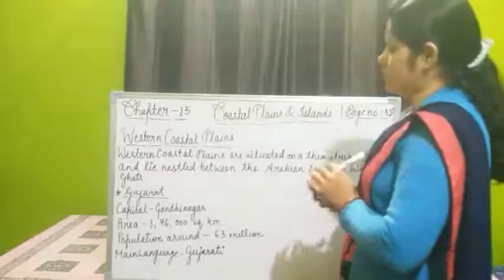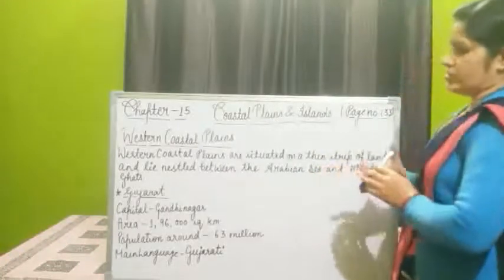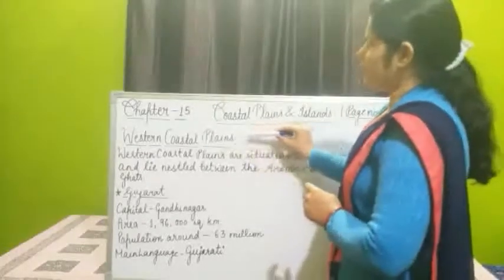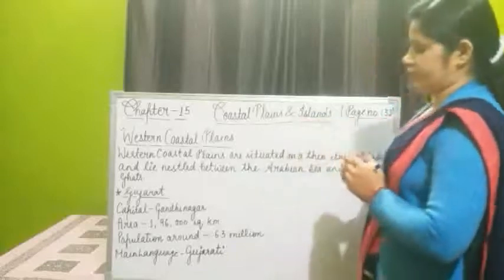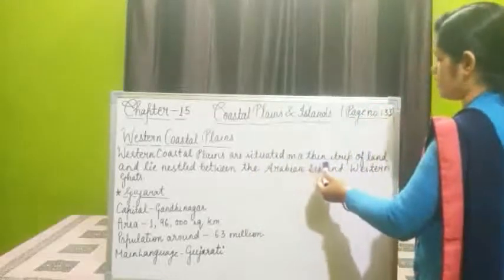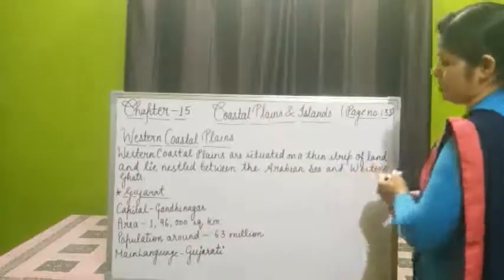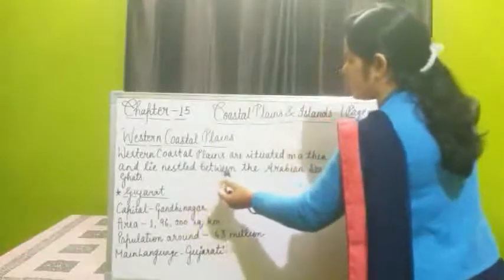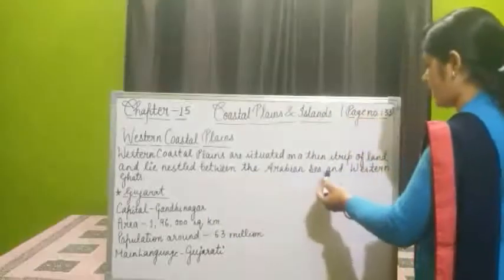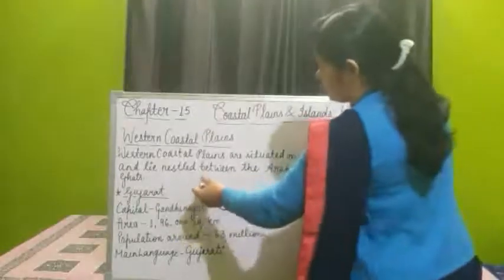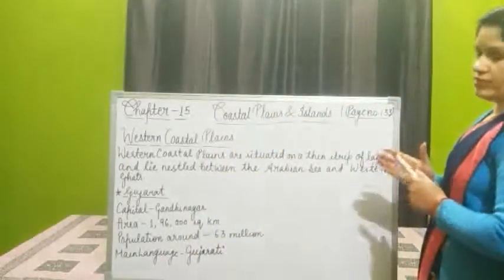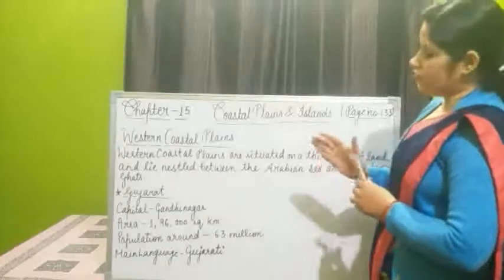As it is clear from the name, we will know in this chapter about coastal plains. First, we will know about western coastal plains. Western coastal plains are situated on a thin strip of land, nestled between the Arabian Sea and the Western Ghats. This is the location of western coastal plains, which we find when you see the map of India on the west side.